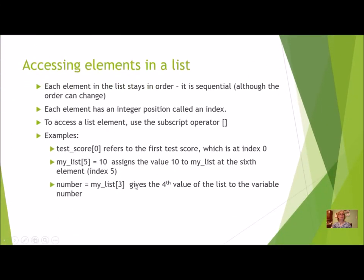We also learned how to access elements by using square brackets — in this instance it's called a subscript. Each element in a list stays in sequential order, but you can change the order using sort. Each element has an integer position called an index. To access a list element, use the subscript operator. The square brackets are the subscript operator, placed right after the list name without an equals sign, and inside the brackets it cannot be empty — it has to have the index number.